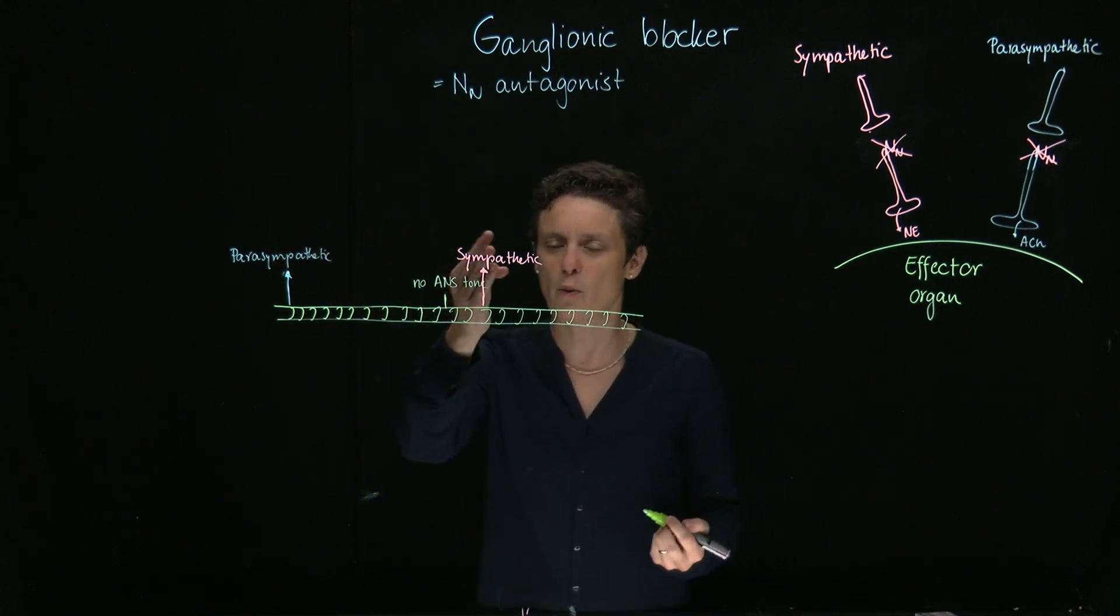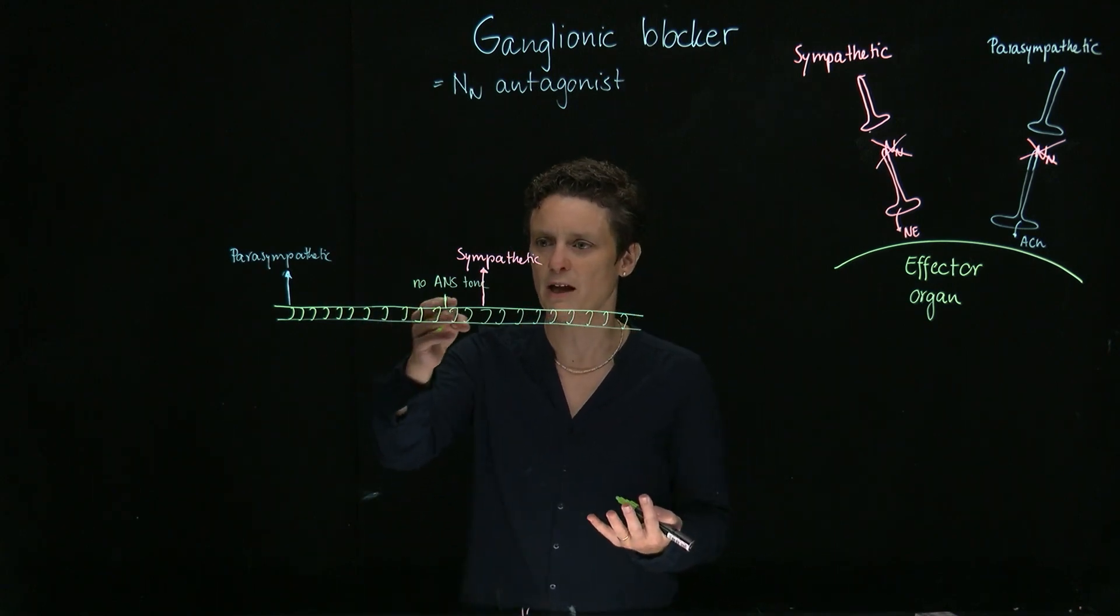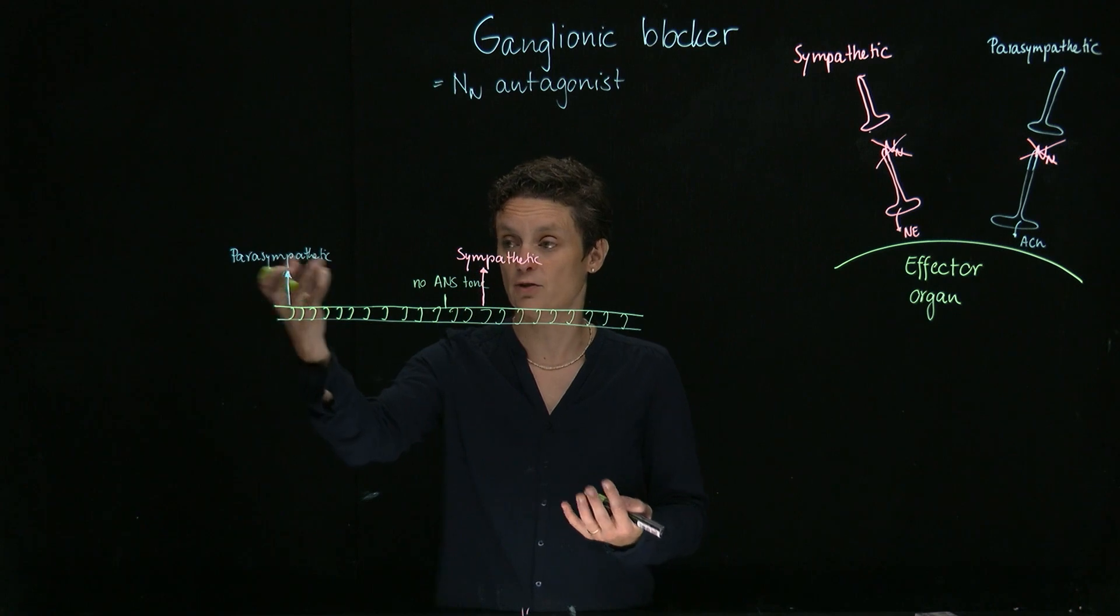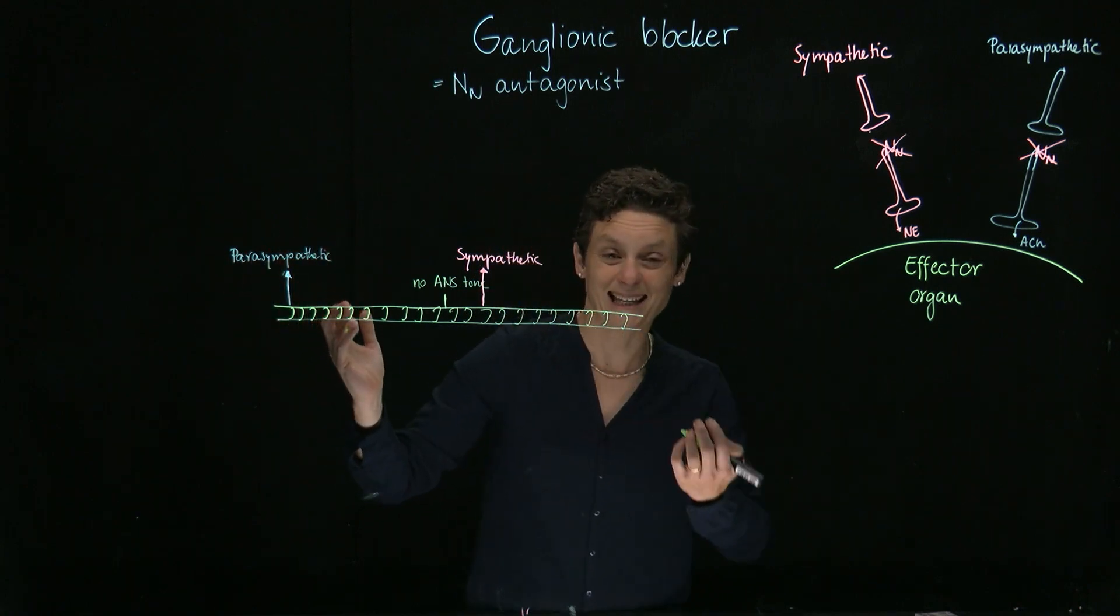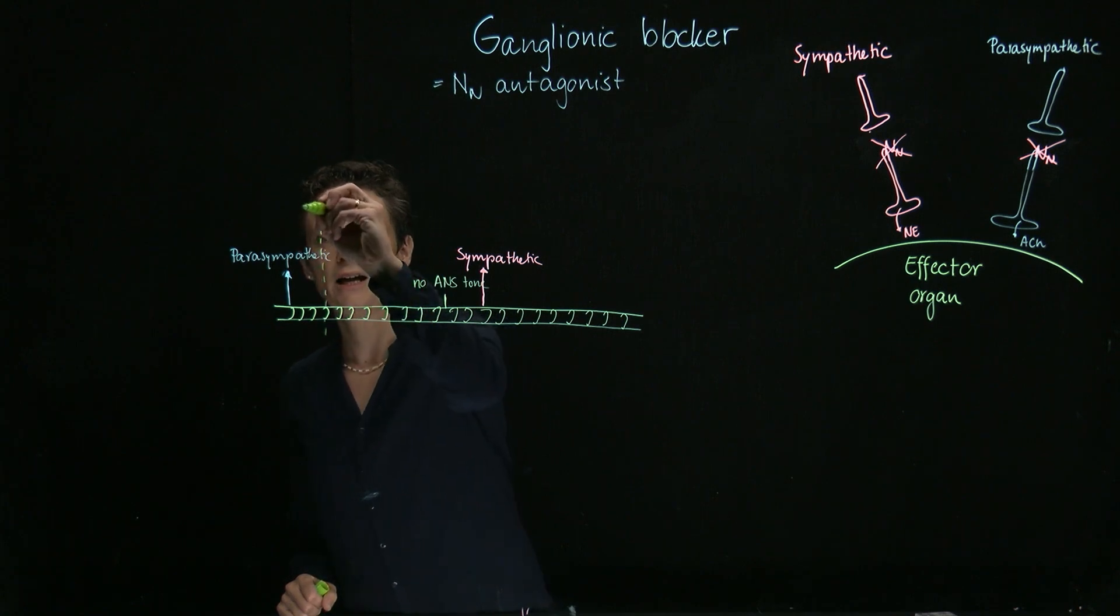But the parasympathetic is strong. It's the winner. So where would we end up? How would we describe our autonomic tone? The parasympathetic draws very heavily on that side, the sympathetic a little bit on the other side, so it would end up somewhere here, and that would be our autonomic tone.